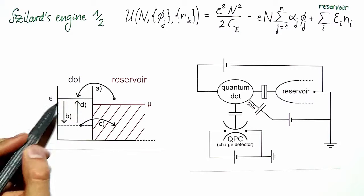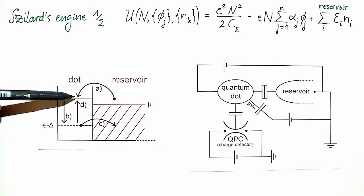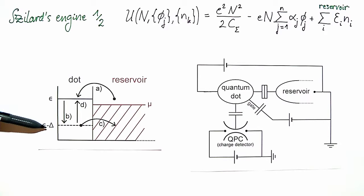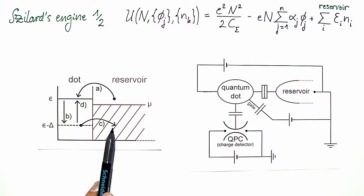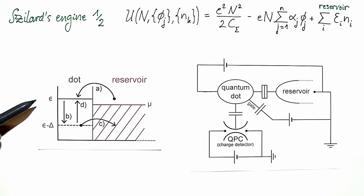The four steps of the cycle are the following. In the first one we measure the occupancy of the dot and we assume that we observe that an electron has tunneled into the dot. Then we drive the energy of the dot level down by an energy delta. We measure the occupancy of the dot again and assume that we have observed that the electron has tunneled out of the dot. Then in the fourth step we drive the energy of the dot level back to the original value E.